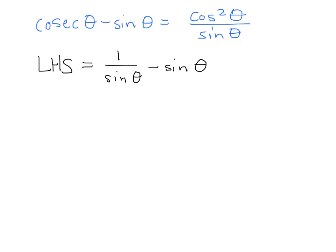Now, we want to simplify this by turning it into a single fraction. So if we multiply by sine theta over sine theta, our second term, we're left with 1 over sine theta minus sine squared theta over sine theta.